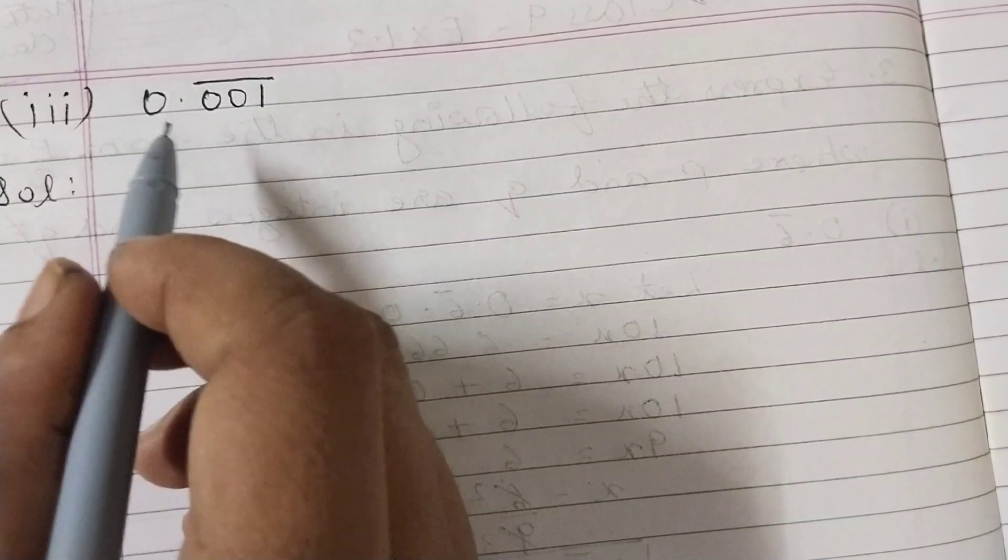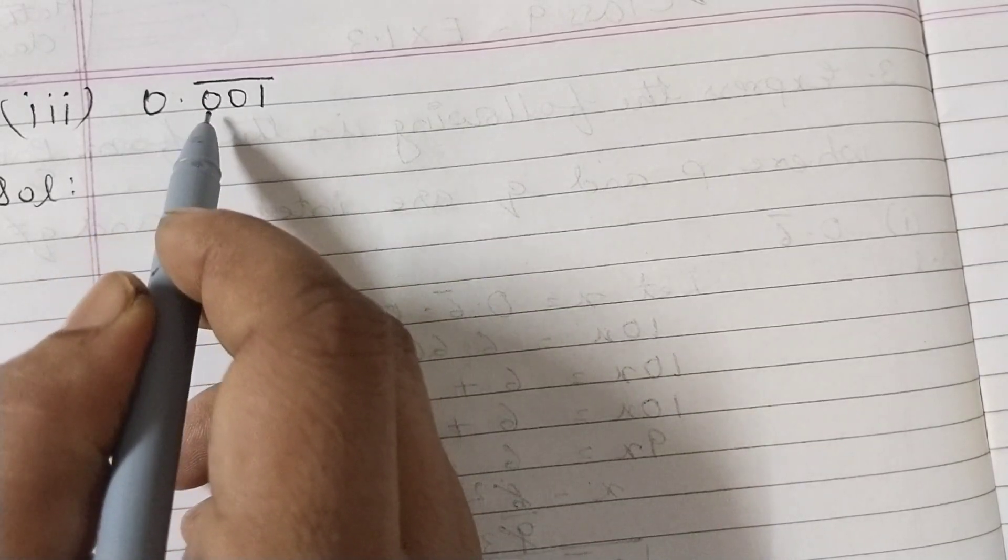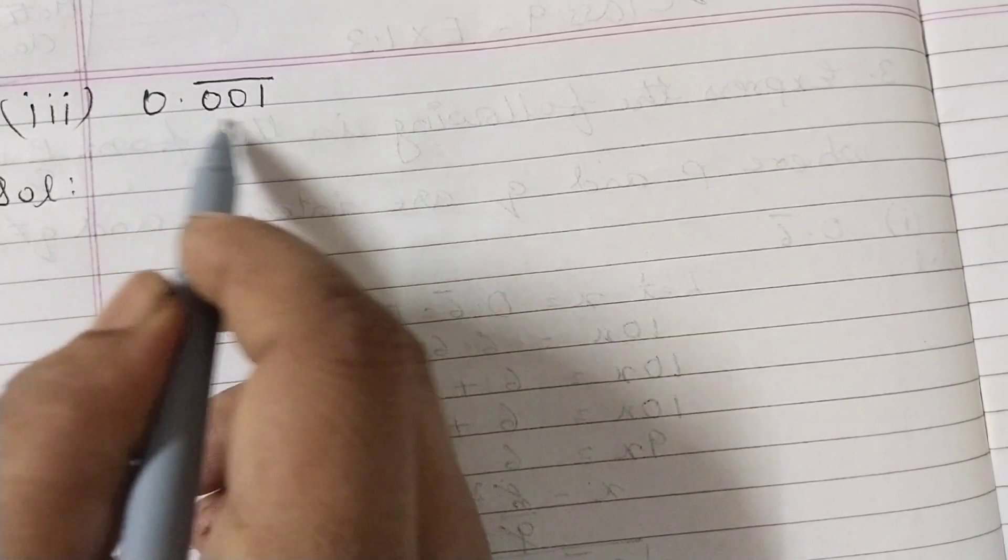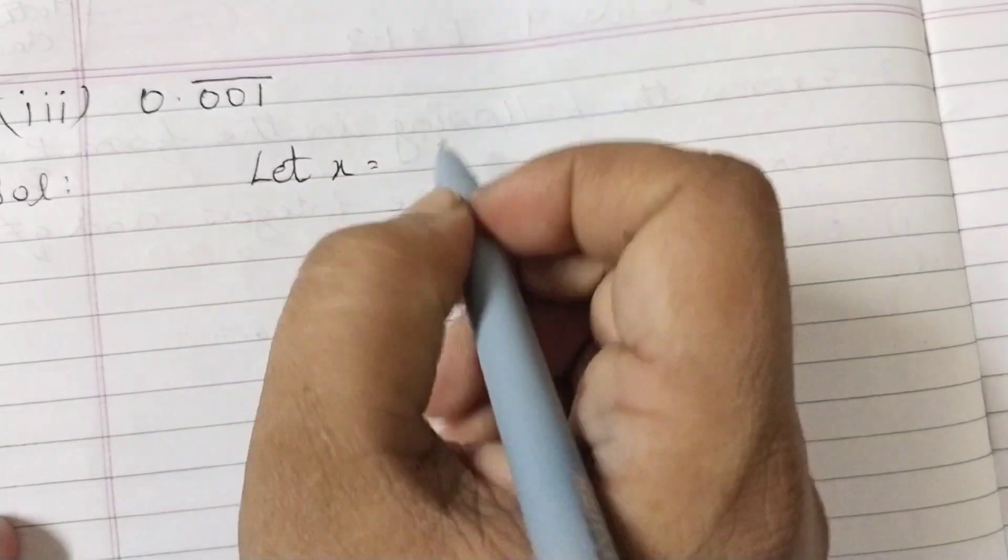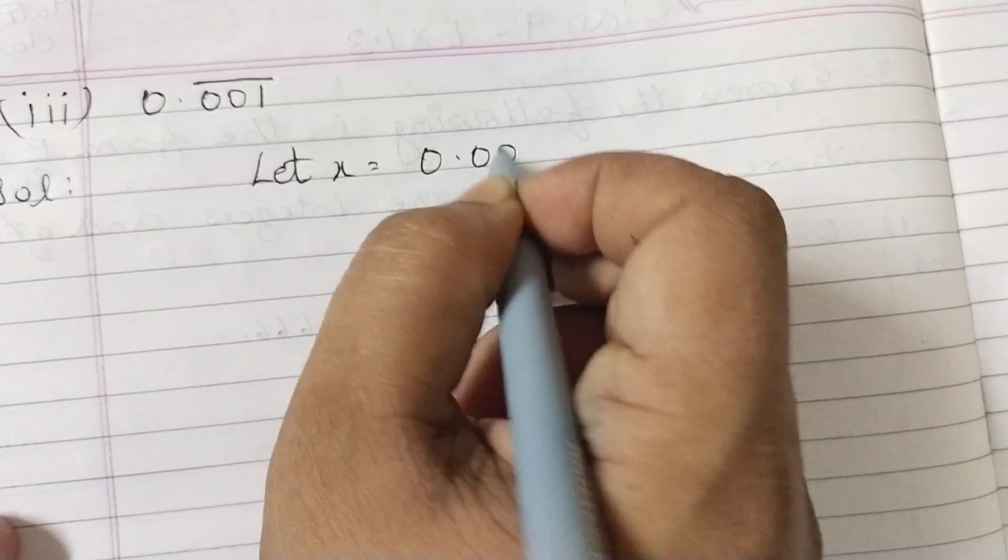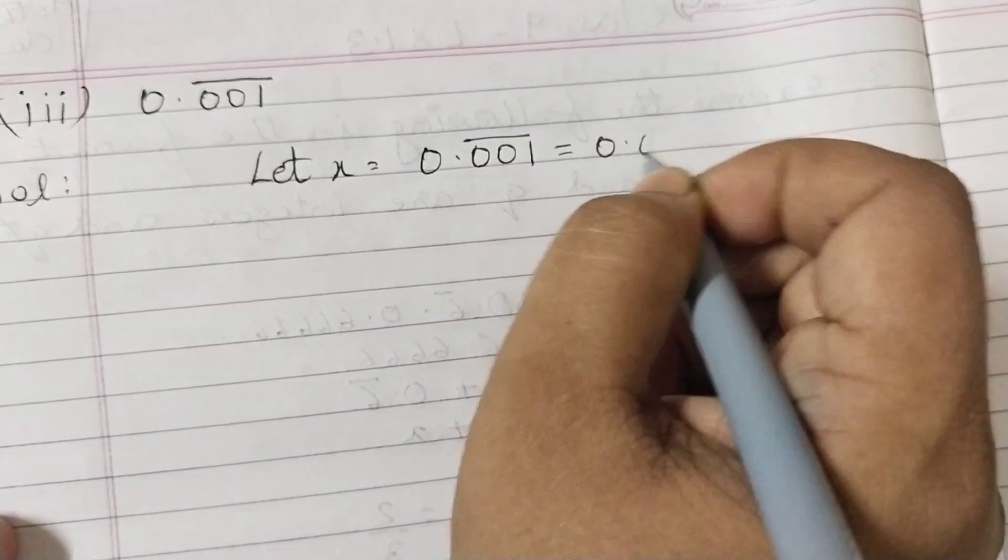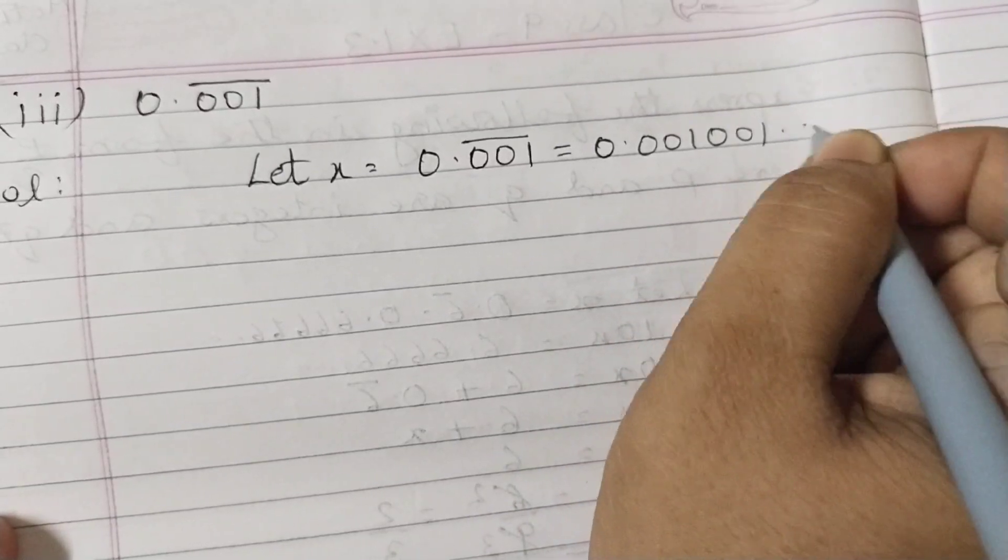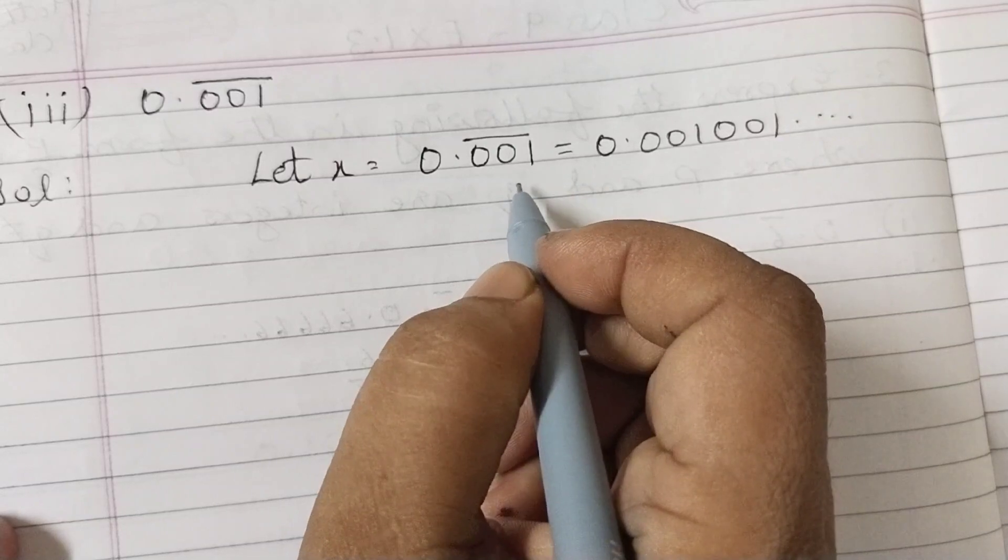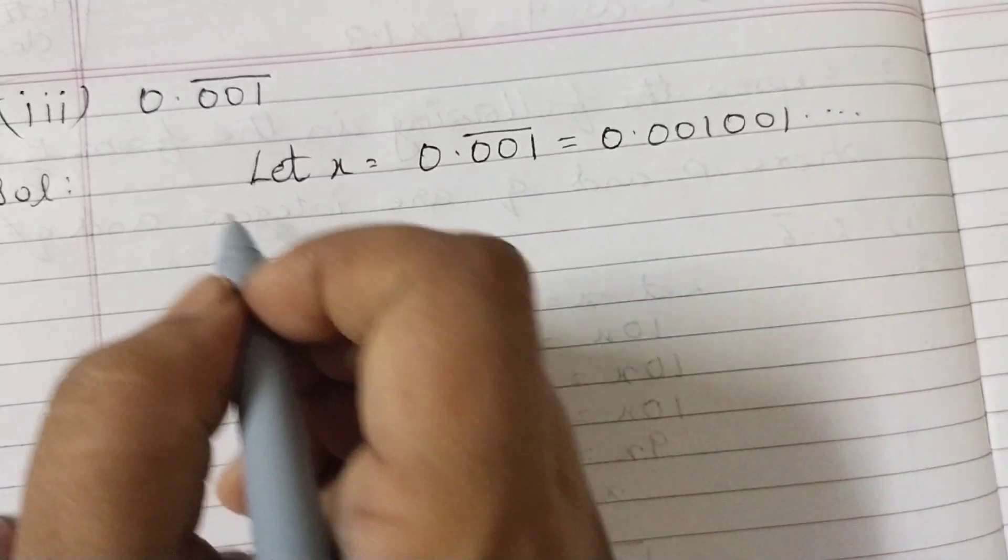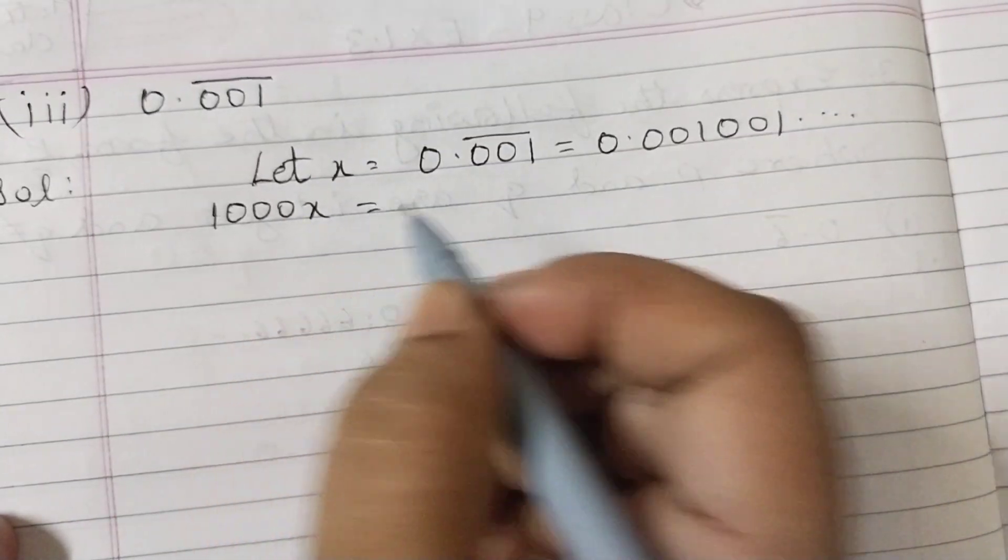The next one is 0.001̄, the bar is on top of 001. That means these three digits are repeating. So let x equal 0.001̄, which equals 0.001001... This block is repeating. Now three digits are repeating, so multiply by 1000. So 1000x is 1000x, and the decimal point will shift three places to the right—one, two, three. So after one you will get the decimal point.